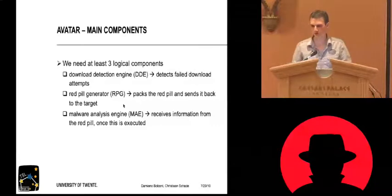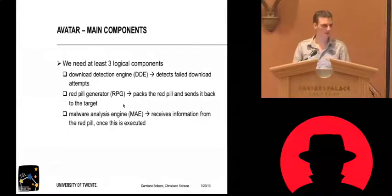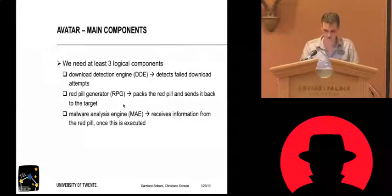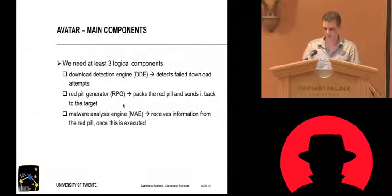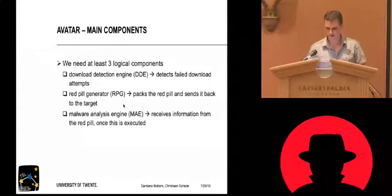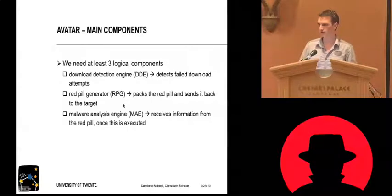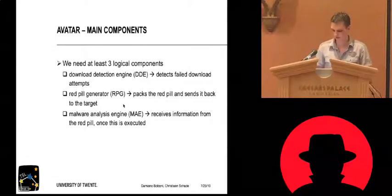So far we've seen the goals and the idea of Avatar, but we want to know how it works. There are three logical components. First, we need something that detects the failed download attempt — the base of the whole idea. The purpose of this download detection engine is also to verify that what's being downloaded is a binary. Second, there's the red pill generator. This can operate in two modes: it can send a standalone red pill back without attaching itself to the original egg, or it can attach itself to the egg through PE injection. And lastly, there's the malware analysis engine, which receives all the data from the red pill, analyzes it, and sends a command back — should it terminate the spore, or should it allow execution?